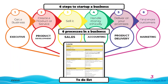This course includes a to-do list template that you are required to use during the course. Just like your filing system, it's divided into six business processes. These processes help you to determine your priorities. For example, right now you're focusing on step one, get a business, or the executive process. So when you look at your to-do list, anything in that section will be your top priority.